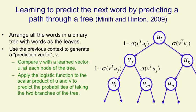And conversely, we take the left branch with one minus that probability. And so on, all the way down the tree to the word we want.